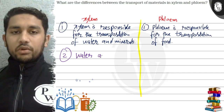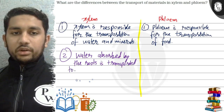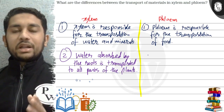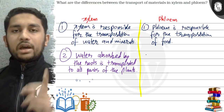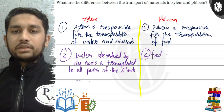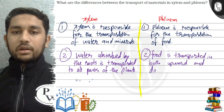Water absorbed by the roots is transported to all parts of the plant in only an upward direction, whereas in phloem food is transported in both upward and downward direction.